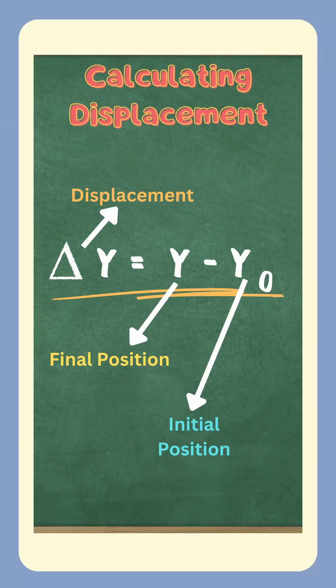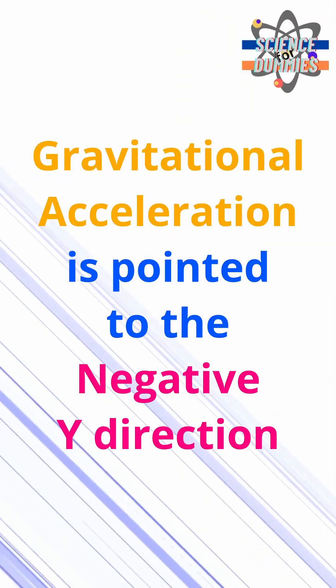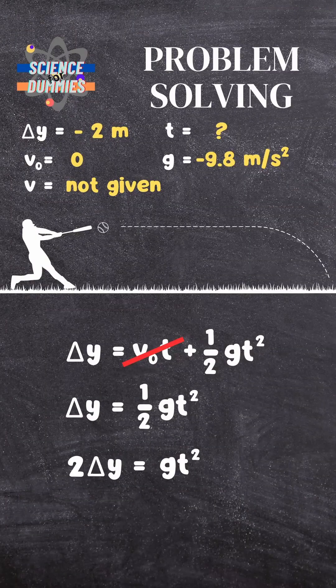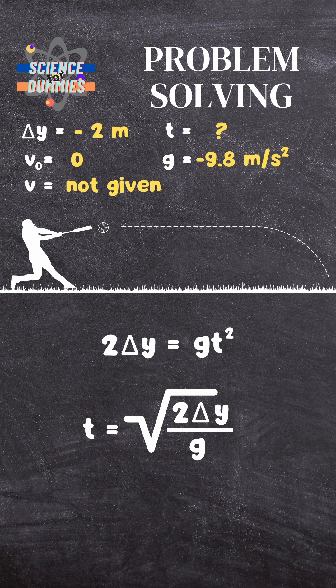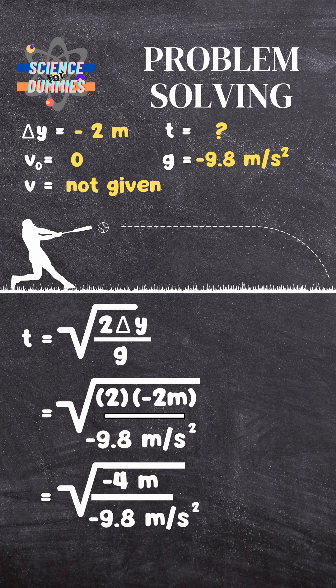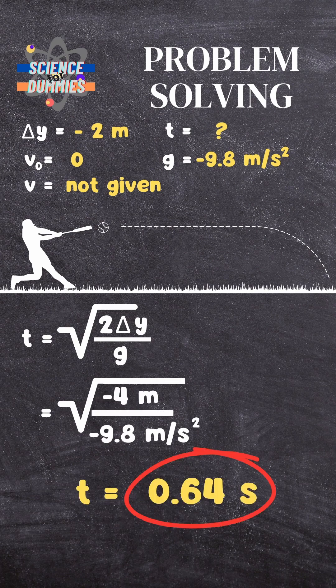Delta y is negative because of this equation. Finally, g is also negative with respect to the y-axis. The v₀t term cancels out because v₀ is 0, which leaves us with this equation. With a little algebra, we derive the formula for t. Substitute the values, simplify, and arrive at 0.64 seconds, which is the hang time of the ball.